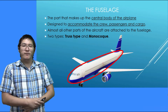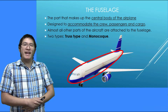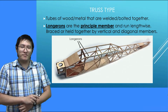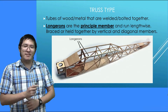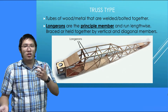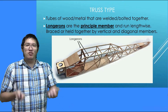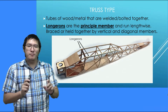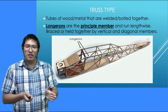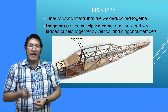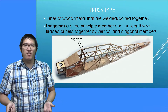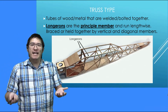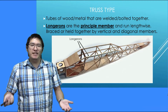There are two types of fuselages: truss type and monocoque. First off is the truss type fuselage. This type of fuselage is made out of tubes of either wood or metal, and they are welded or bolted together. Longerons are the principal member of this fuselage — they run lengthwise, and they are held together by vertical and diagonal members. Think of it kind of like the Wright Flyer; in early airplanes, they used to be truss type.